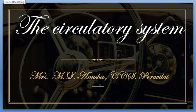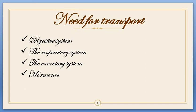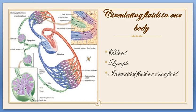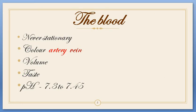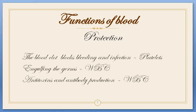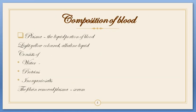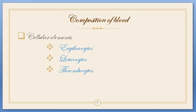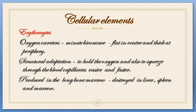Greetings children. The topic we are going to learn today is the second part of the circulatory system. In the first part, we learned about why we need circulation, the circulating fluids in our body, characteristics of blood, functions of blood, and we started learning about the composition of blood and cellular elements. Now we are going to learn in detail about the cellular elements of blood.